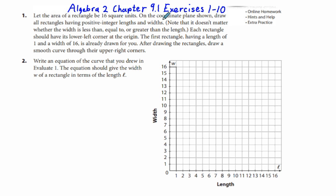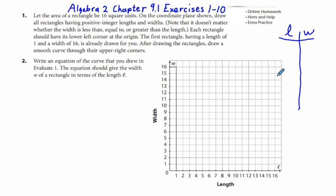Problem 1: Let the area of a rectangle be 16 square units on the coordinate plane, with all rectangles having positive integer lengths and widths. As our independent variable, we're going to have length for this table, and as our dependent variable, we're going to have width. We have a rectangle already drawn whose length is 1 and whose width is 16.